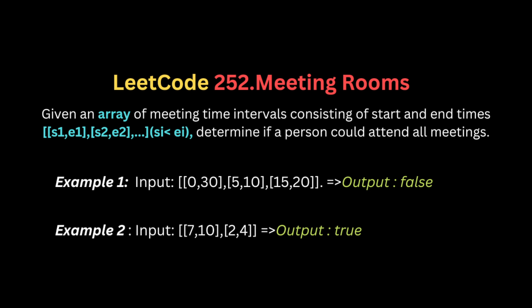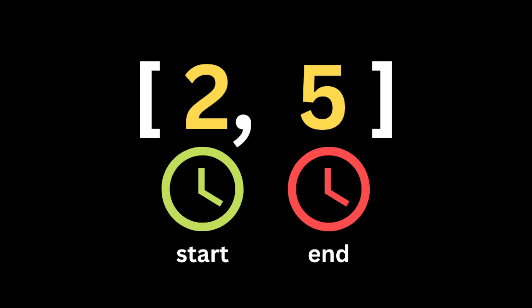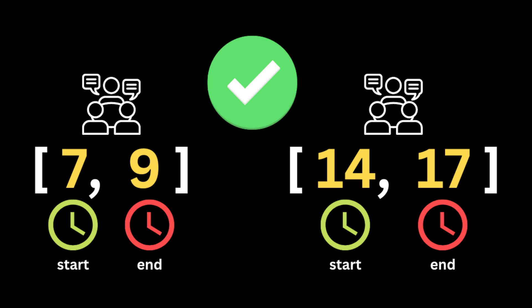The problem gives us an array of meeting time intervals consisting of start and end times, and asks us if a person can attend all the meetings. Each array has two values: the first value is the time the meeting starts and the second value is the time the meeting ends.